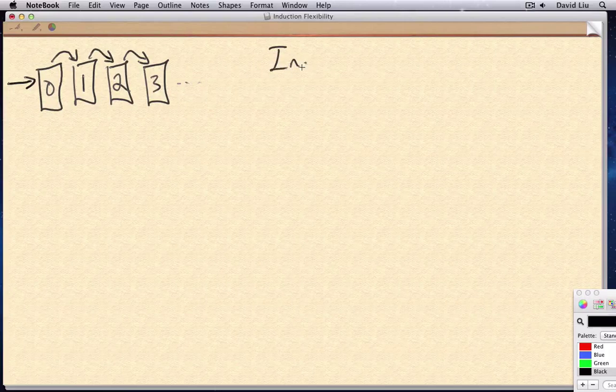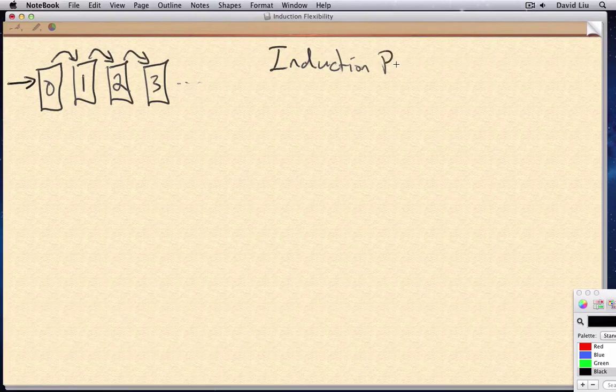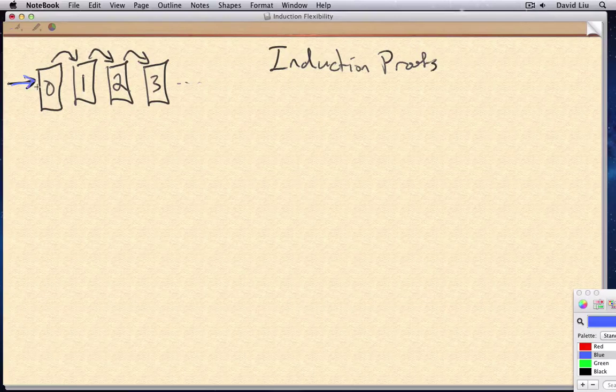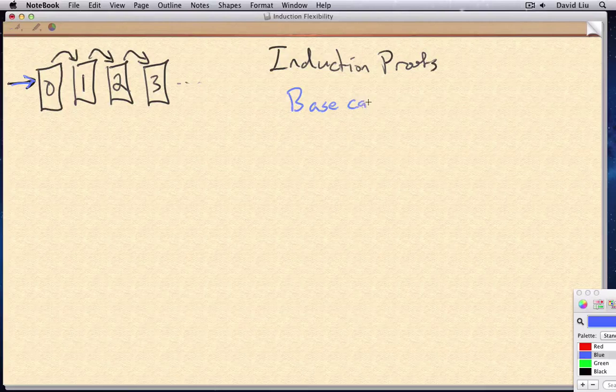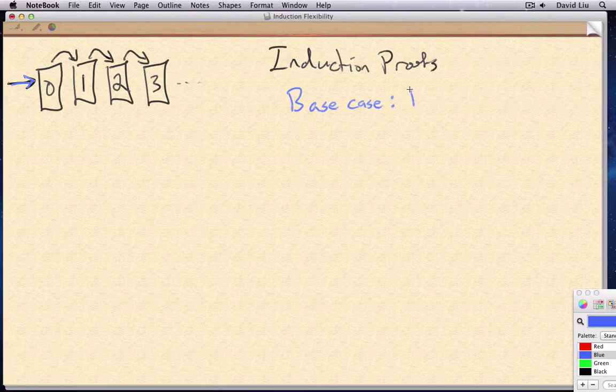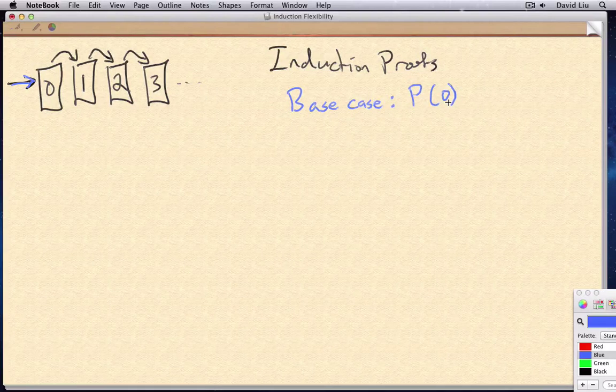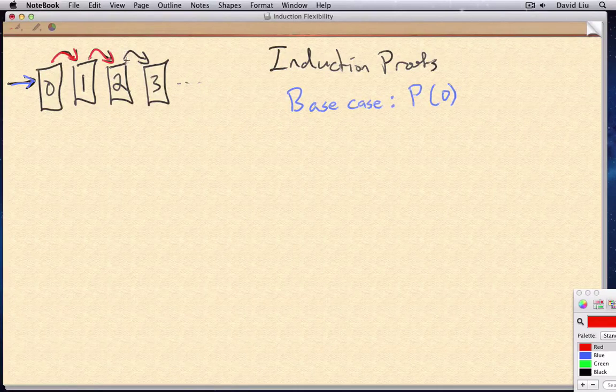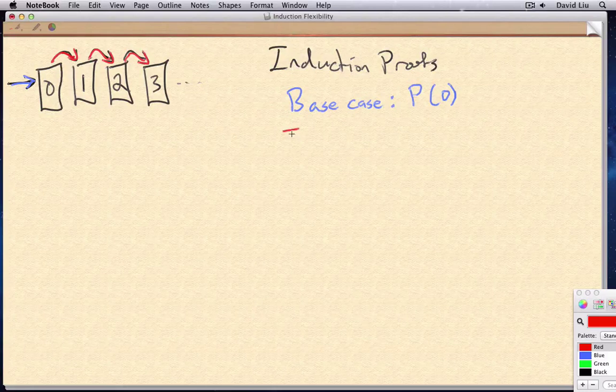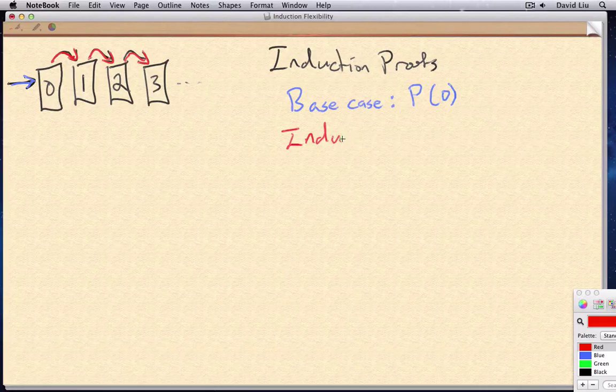We formalized this into our induction proof technique, which really consisted of two parts. The blue part, we called a base case, proving that p of zero was true. And then these links between dominoes, or between natural numbers, we proved those in the induction step.